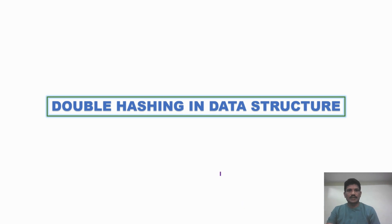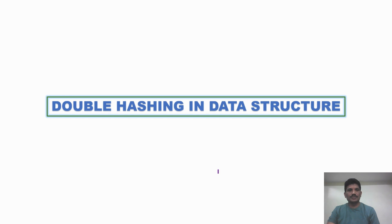In today's class, I will discuss the double-hashing concept in data structure. What is double-hashing? Double-hashing is a collision resolution technique which is used to resolve collisions. What is the procedure to resolve collisions by using double-hashing?